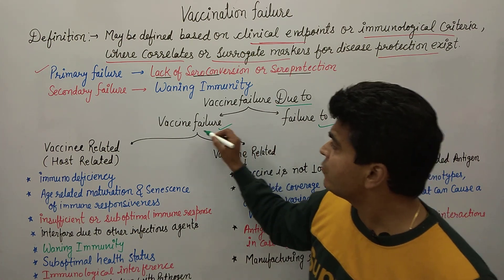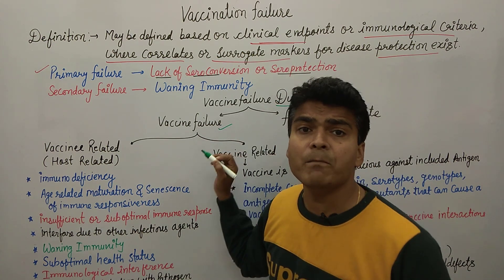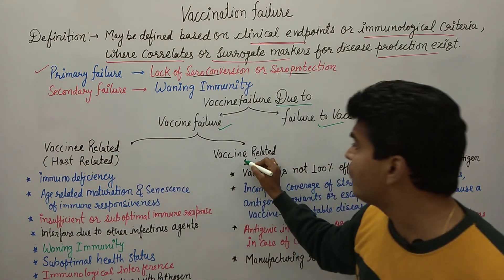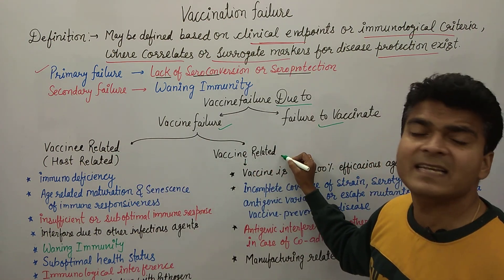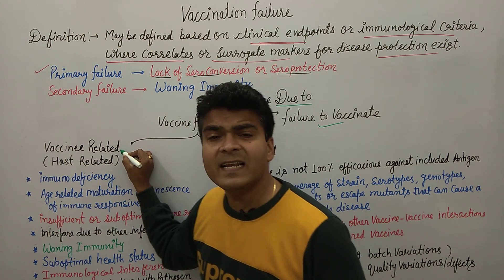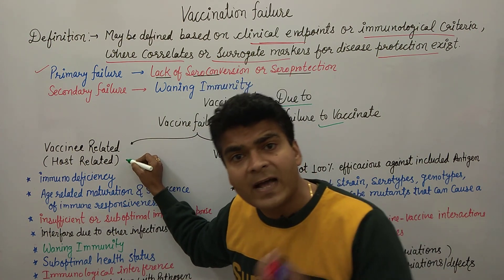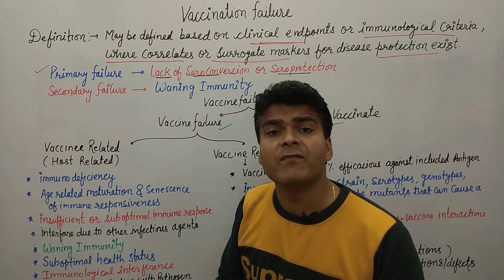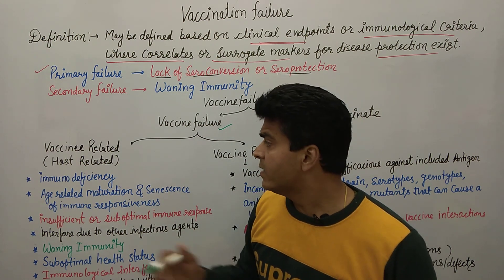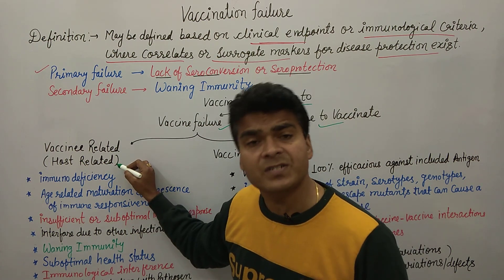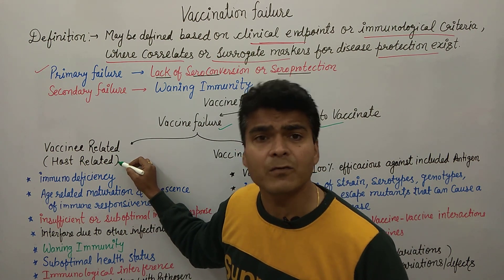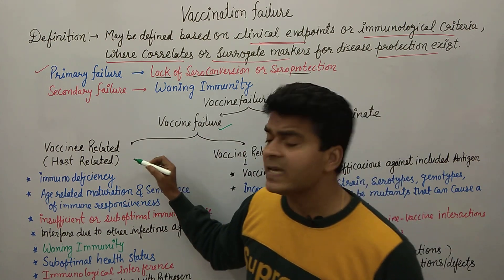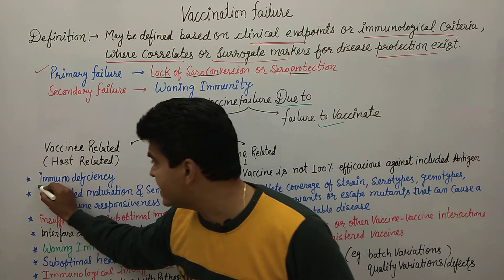What is vaccine failure? Vaccine failure may be of two kinds: vaccine-related or host-related. Vaccine-related means the failure is due to the vaccine itself. Host-related means the failure is due to the person who received the vaccine. So what can the reasons be? The first one is immunodeficiency.